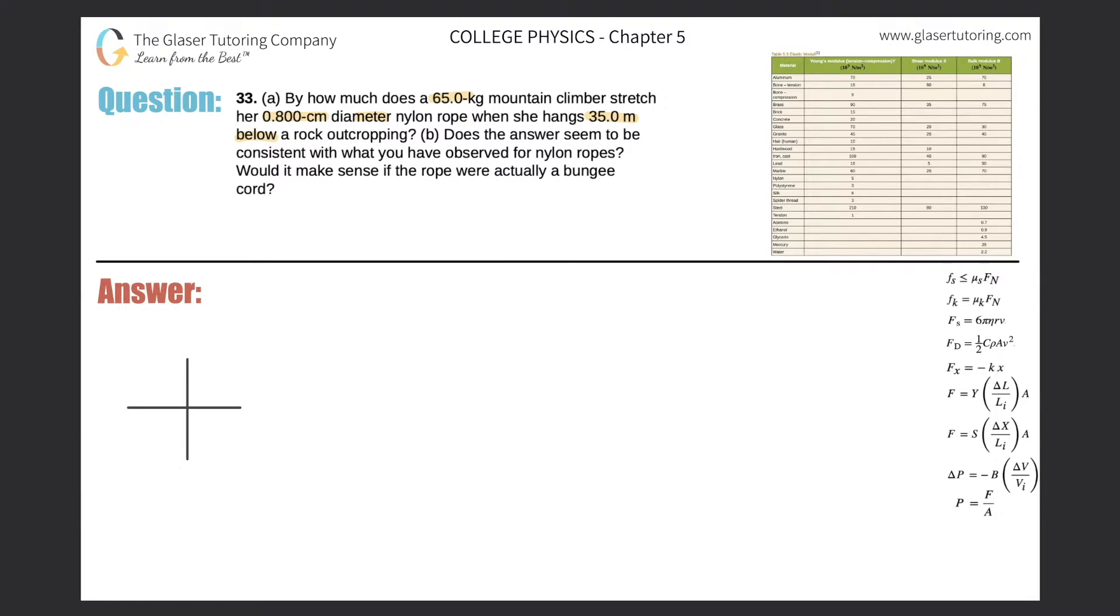This point in the middle will represent the climber, and the climber has a certain weight to her. It says that she has a mass of 65 kilograms, so weight is equal to mg.